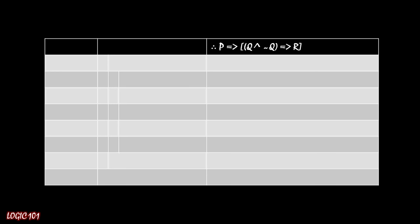The main operator of the statement is a conditional, and one of the tips that I've given you before is that usually, most of the time, if you're working with conditional statements, you should go with conditional proofs. So let's go ahead and start off that way. Let's go with line 1 as being the antecedent of the conditional statement, that's P, as an assumption for a conditional proof, and now we are ultimately trying to show that (Q ∧ ¬Q) implies R.